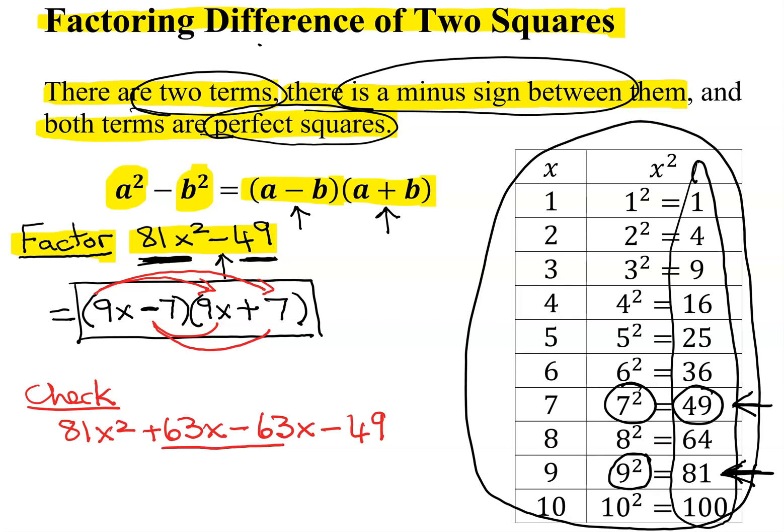And now look, these middle terms add up to 0. So do I get the original problem I had? Yes, 81x squared minus 49. So you know you have the problem correct.